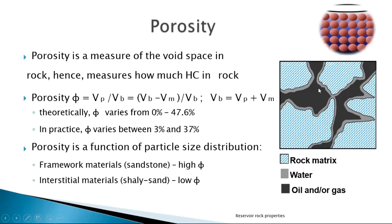To obtain pore volume and bulk volume, we do it in the laboratory using equipment called a porosimeter. We put the rock sample inside it; helium gas goes into those pore spaces, and the amount of helium that enters tells us the pore volume. Bulk volume is easy to calculate — you simply multiply the dimensions. Pore volume equals bulk volume minus matrix volume.